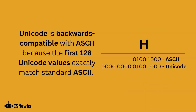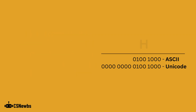Unicode is backwards compatible with ASCII because the first 128 Unicode values match the first 128 ASCII values. So capital H in this example would be represented using the same values in both character sets.